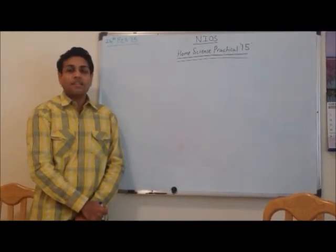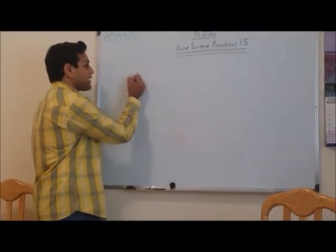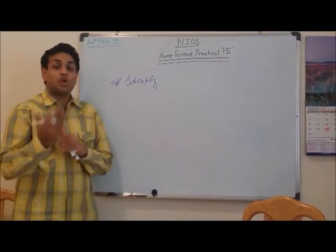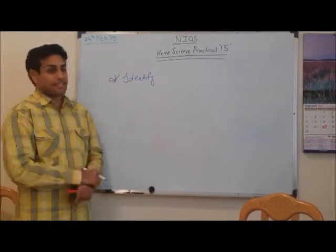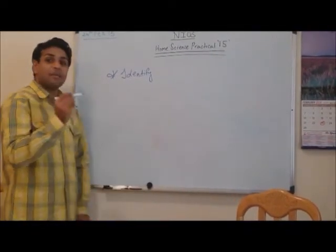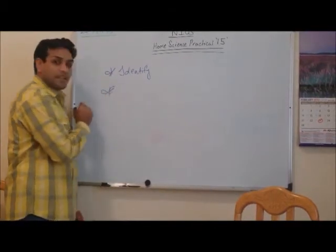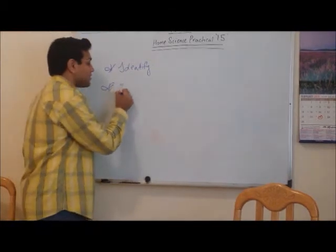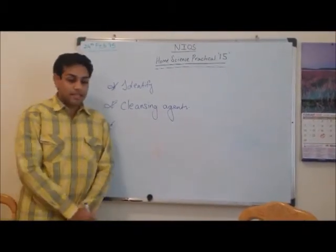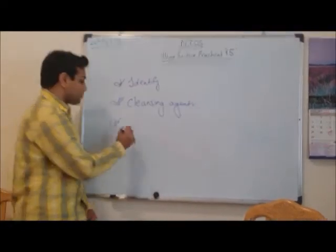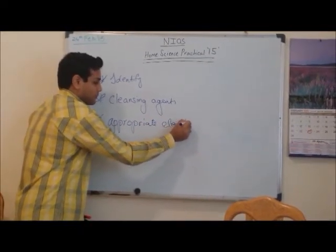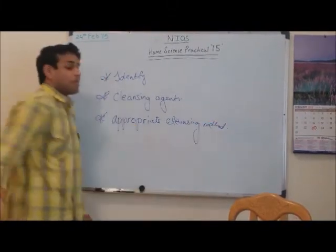Before coming forward to the practical area, let us get to know the objectives. Our first objective is to identify the surface — what type of surface it is, whether it is a door, window panes, tiles, flooring, and what quality it is — wooden, marble, or ceramic tile — because every chemical to be used is different. Our second objective is to identify the cleansing agents. Our third objective is to select an appropriate cleaning method.